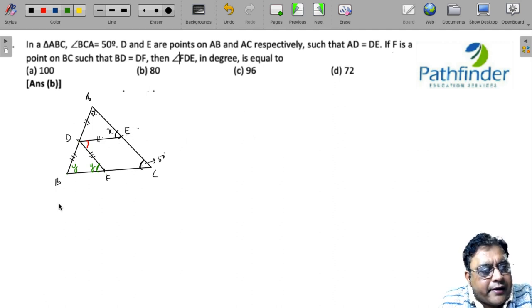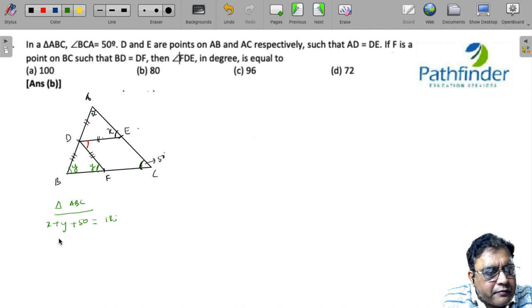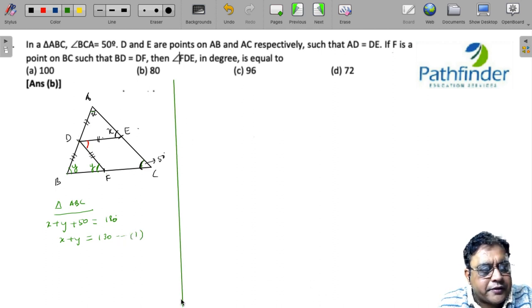Now there are three triangles to be considered. We have triangle ABC. In triangle ABC, the sum of three angles at the vertices X plus Y plus 50 must be 180 degrees, which means X plus Y must be 180 minus 50, that is 130 degrees. This is your first equation.